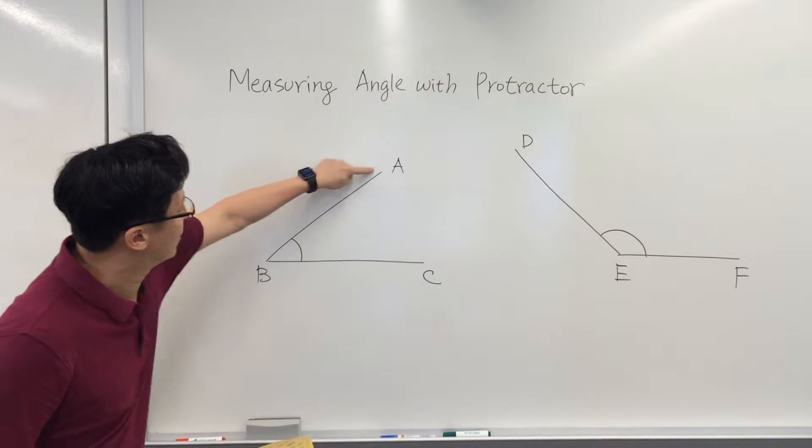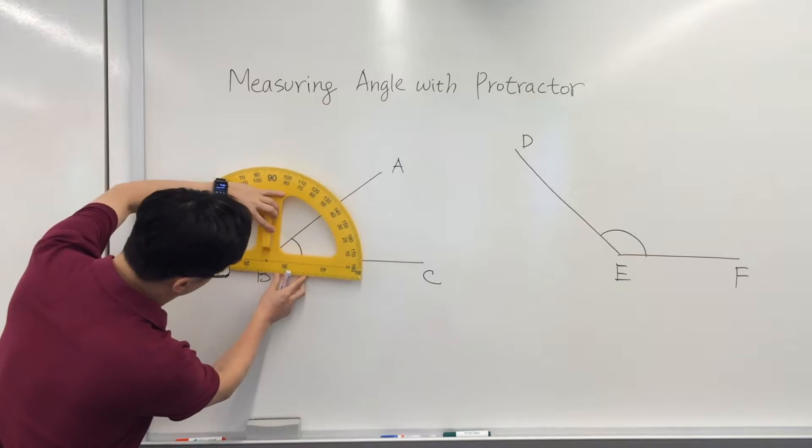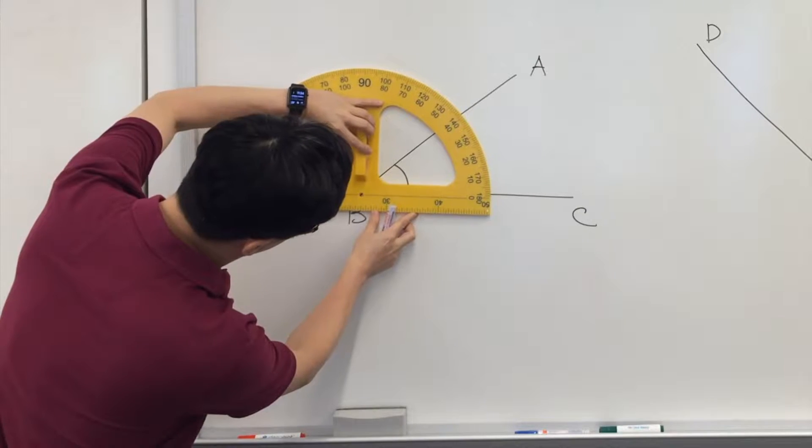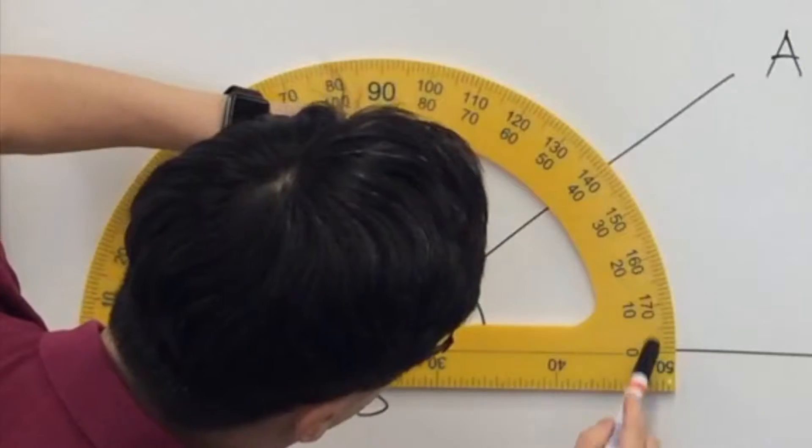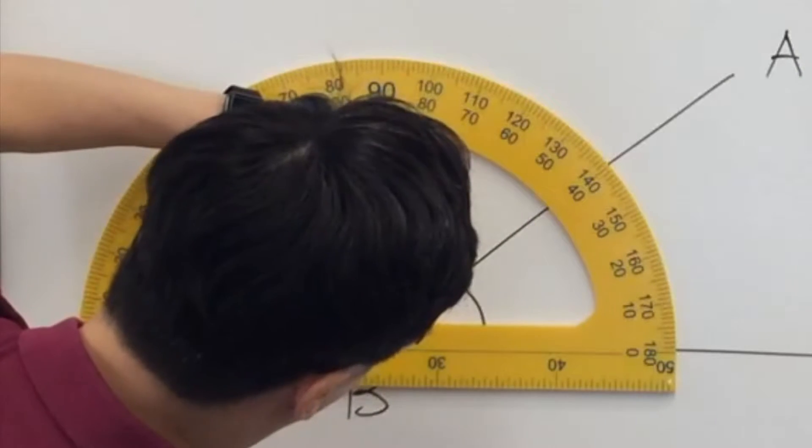How can I measure angle A, B, C? We just put the center here, and we can find that this angle is about 41 degrees.